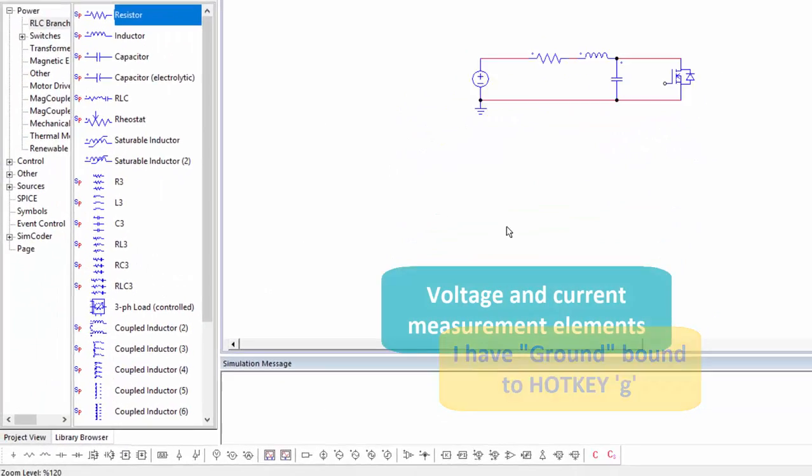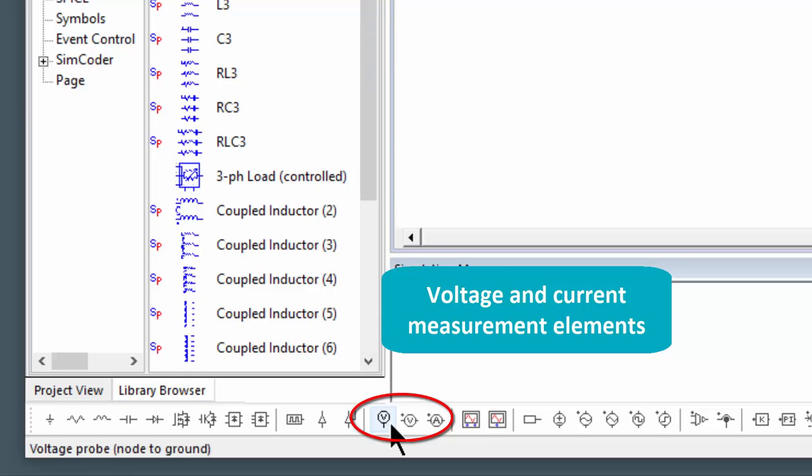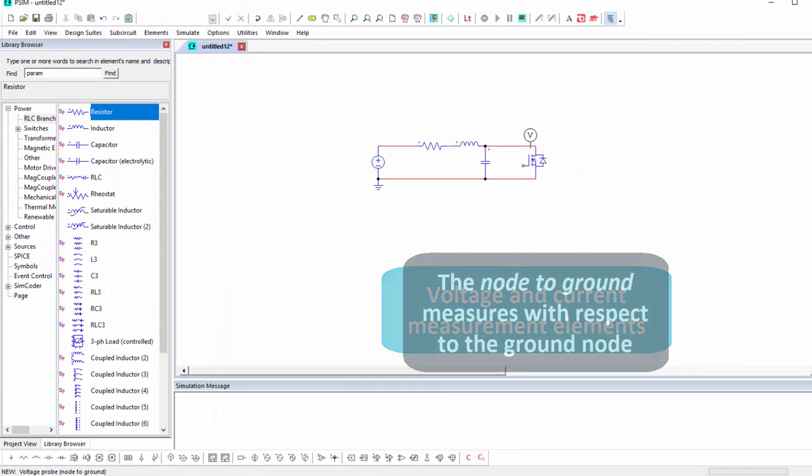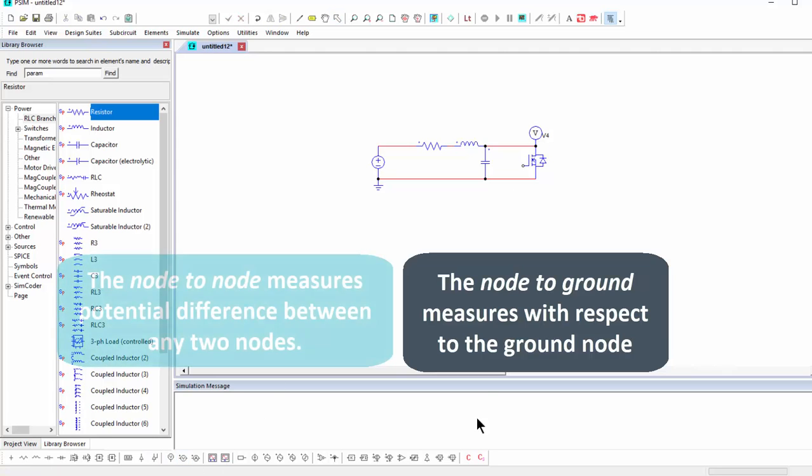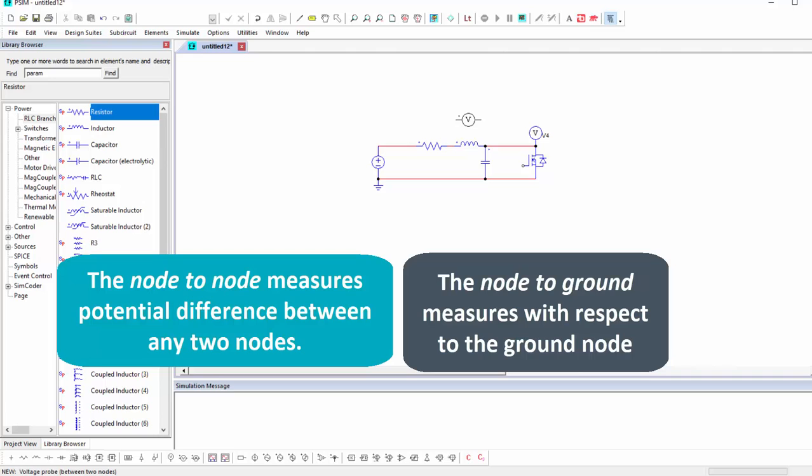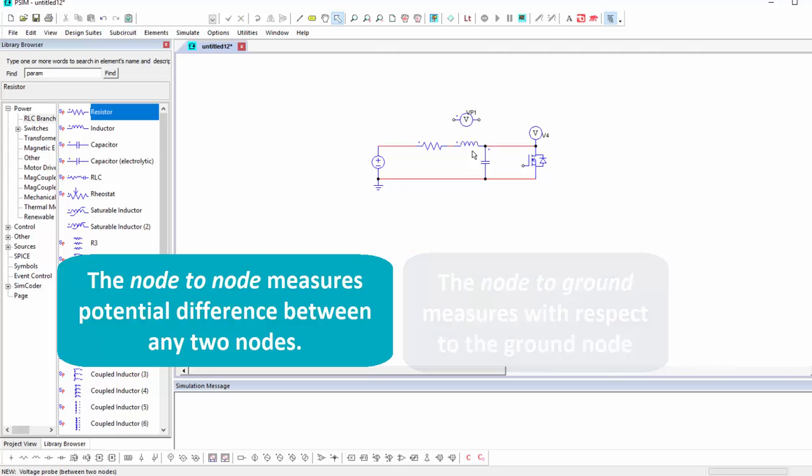So let's place some measurement points now, so we'll grab the voltage probe, which is node to ground, so that measures the node versus ground voltage. We'll also place a voltage across node to node measurement, so here we can measure across this inductor.